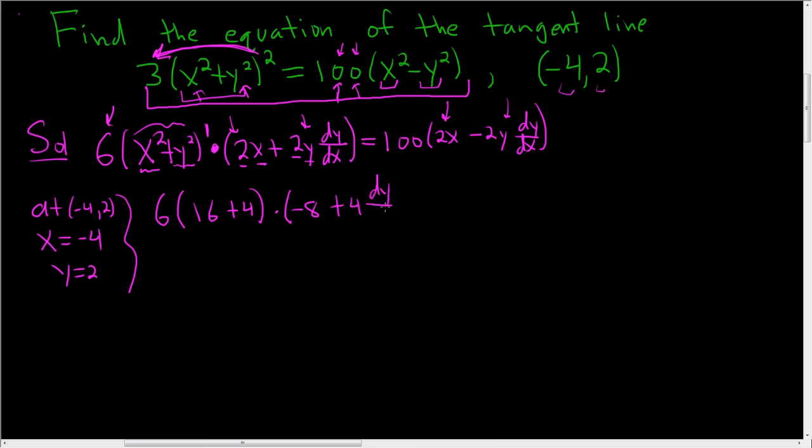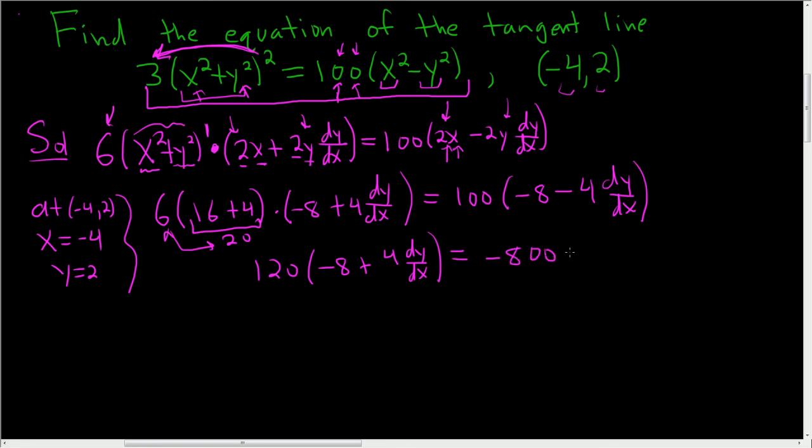So dy dx looks really ugly. Over here we have 100. Let's see, 2 times negative 4 is negative 8. And then minus 2 times 2, so 4 dy dx. All right, let's clean this up. So 16 plus 4, this is 20. 20 times 6 is 120. So we get 120, negative 8 plus 4 dy dx. And it looks like here we get negative 800 minus 400 dy dx.